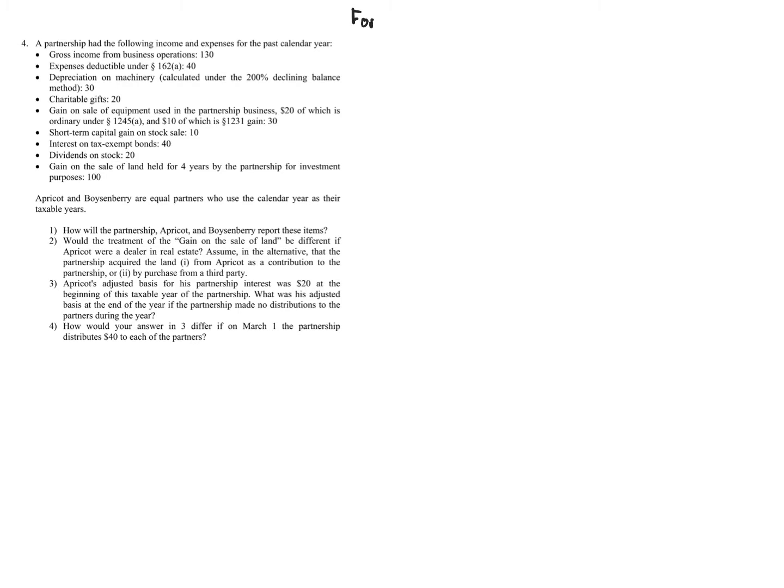Starting with question one: how will the partnership, Apricot and Boysenberry, report these items? It's easiest to start with the partnership. The partnership files Form 1065, and the first page of the 1065 covers Ordinary Business Income and Loss.